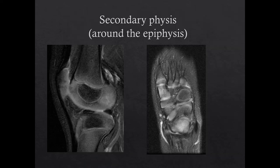There is also a secondary physis, which is a circular structure around the epiphysis with a similar layered appearance, although this is not usually as visible as at the primary physis. The secondary physis allows an epiphysis to enlarge in a circumferential direction. Carpal and tarsal bones are considered epiphyseal equivalents, and also have a circular physis surrounding them, allowing them to enlarge circumferentially.